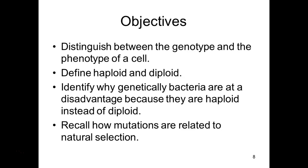PKU is a genetic defect they test for in the hospital. They're testing to see if the baby has the ability to take the amino acid phenylalanine and convert it into other essential amino acids. Some people do not have that enzymatic ability because neither parent gave them the DNA to make that effective enzyme. Phenylalanine builds up in their body, so they have to be on a special diet to avoid excess phenylalanine. It comes down to genetics — the parents gave them two defective copies.